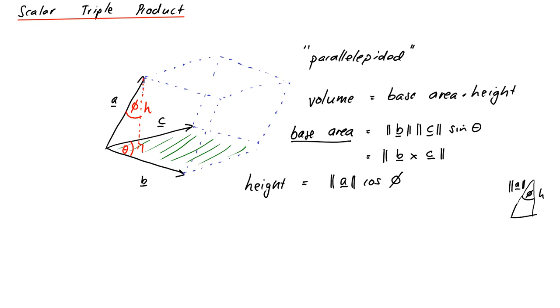So if we put those things together, then what we get is that the volume is base area, times height. Let's just substitute in the pieces we've got. So it's equal to the length of B cross C, times the length of A, times cosine of phi.